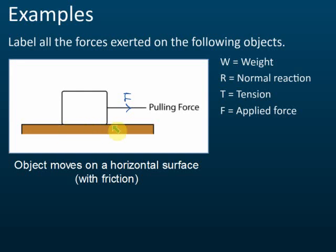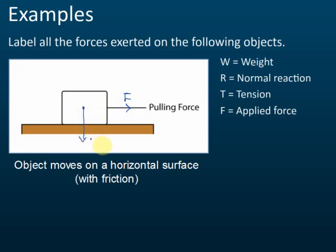This is a smooth table. Smooth table means there's no friction, so we don't need to label friction. What other forces act on this object? Any idea?